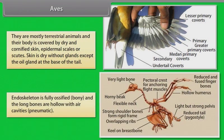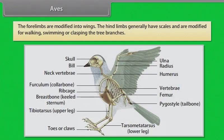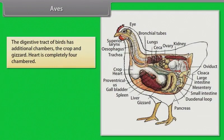Skin is dry without glands except the oil gland at the base of the tail. Endoskeleton is fully ossified, that is bony, and the long bones are hollow with air cavities (pneumatic). The forelimbs are modified into wings. The hind limbs generally have scales and are modified for walking, swimming or clasping tree branches. The digestive tract of birds has additional chambers: the crop and gizzard.